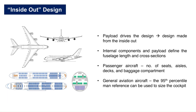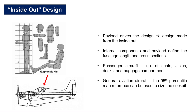For example, the number of seats and the spacing between seats, the number of aisles and decks, as well as baggage space essentially decides the fuselage length and cross sections of a passenger plane. In case of general aviation planes, the 95th percentile man is generally used as a standard reference to size the cockpit and cabin.